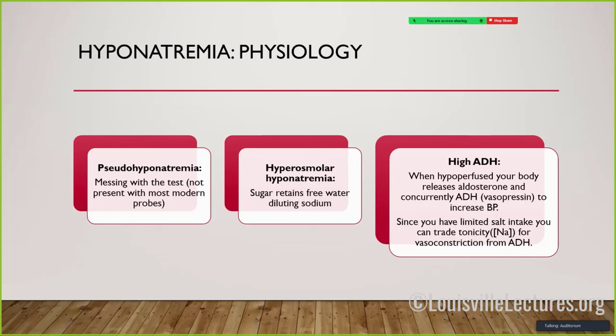If a patient becomes acutely ill, hypovolemic, or their heart isn't pumping well, blood pressure starts to drop. The body releases a bevy of hormones - aldosterone, norepinephrine, epinephrine, cortisol - but also ADH, because vasopressin does multiple things: it controls emotional centers, sodium concentration, and also vasoconstricts. You may see it used as a pressor in the ICU. The body releases it in response to underperfusion, but the trade-off is loss of tonicity.